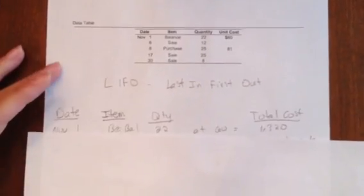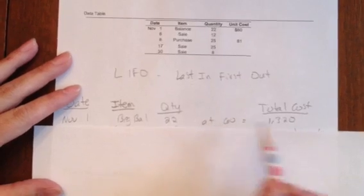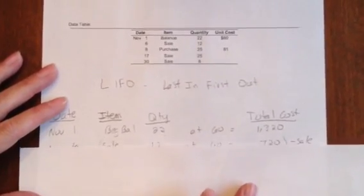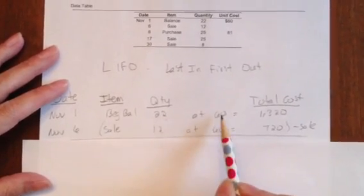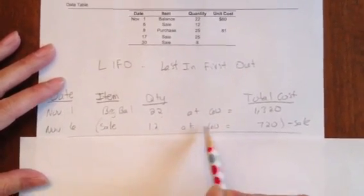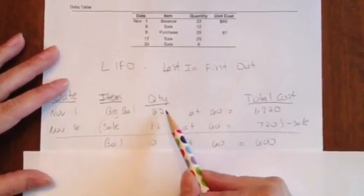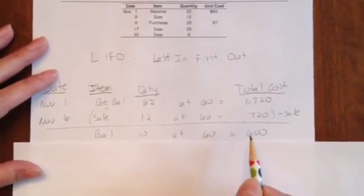If you remember, we started off with the beginning balance on November 1st of 22 at $60 for $1,320 total cost. Then on November 6th, they sold 12. Because all we have is a balance at $60, those 12 are sold at $60 as well for $720, leaving us a balance of 22 minus 12, 10 at $60, $600.